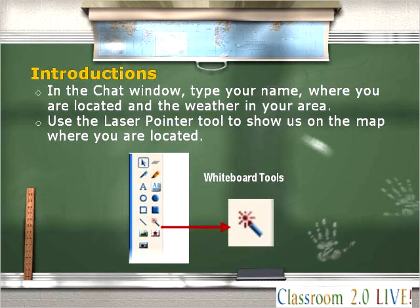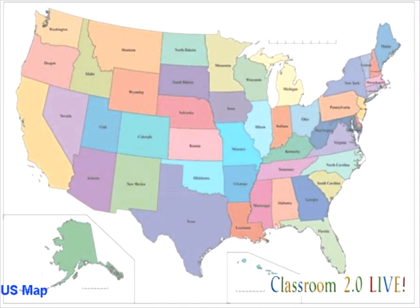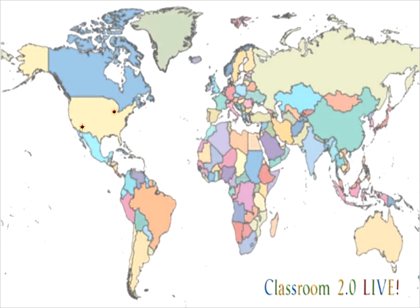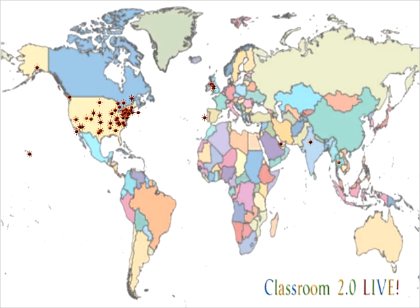We're going to do some introductions using the whiteboard tool and the map. You're going to use the laser pointer — the blue stick with the little red starburst at the end of it. Please click on the laser pointer tool, then click on the world map at your location so we can see where everybody is from. You may need to drag the starburst a little to the left after placing it. We are seeing people from all around the world — United States, Canada, Alaska, Hawaii — and we welcome everybody. Thank you for joining today. Our audience is growing every week and we appreciate you coming to share and learn.